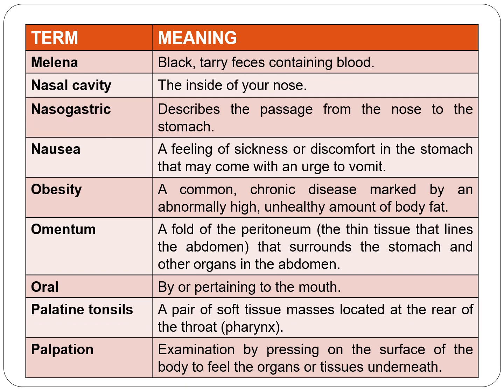The next term is melena — black tarry feces containing blood. Next is nasal cavity — the inside of the nose. Nasogastric — 'naso' means nose, 'gastric' means stomach — describes the passage from the nose to the stomach. Next is nausea — a feeling of sickness or discomfort in the stomach that may come with an urge to vomit, but usually vomiting does not occur.